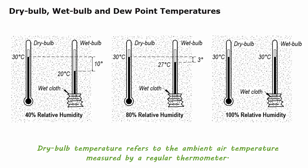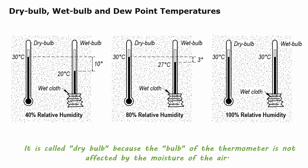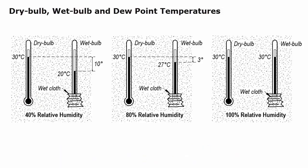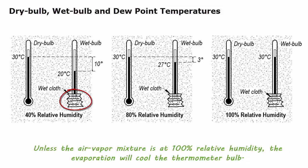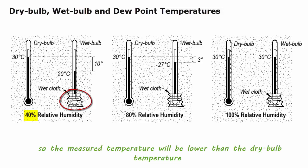Dry bulb temperature refers to the ambient air temperature measured by a regular thermometer. It is called dry bulb because the bulb of the thermometer is not affected by the moisture of the air. Wet bulb temperature measures the effect of moisture by using a thermometer with its bulb covered by a white cloth. Unless the air-vapor mixture is at 100% relative humidity, the evaporation will cool the thermometer bulb, so the measured temperature will be lower than the dry bulb temperature.